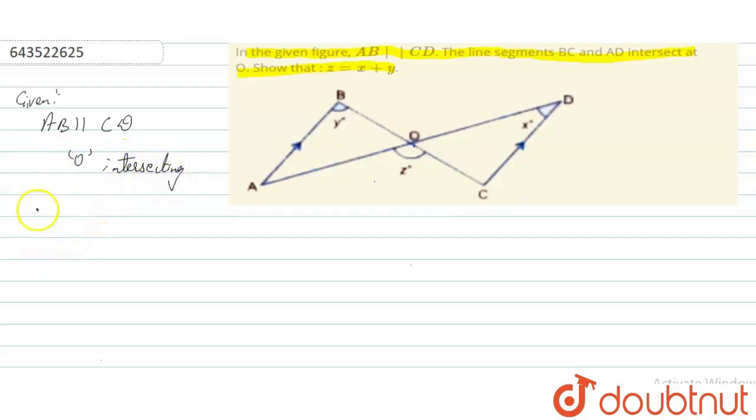Now what will we do? Angle ABO is equal to angle DCO, we will write it as Y. ABO and this are alternate interior angles.